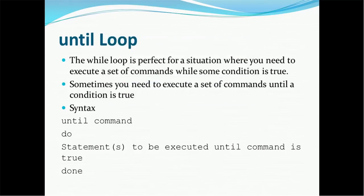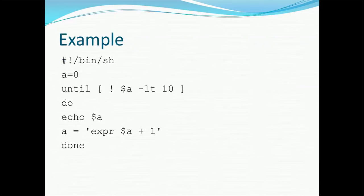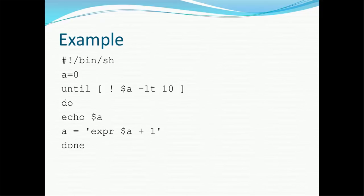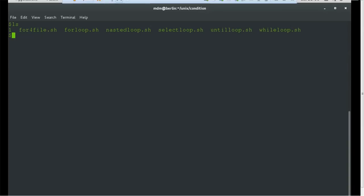The syntax is: until, then do, then the logic you want to execute, and end it with done. Example: hash-bang /bin/sh, define a variable 'a', then until with open bracket, exclamation mark (not), input value less than 10, close bracket, do — we echo the value of 'a', then increment 'a' by one using expression, then done.